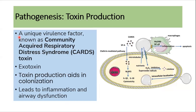The next mechanism in pathogenesis is toxin production. This bacterium produces a toxin known as community-acquired respiratory distress syndrome (CARDS) toxin, which is an exotoxin. This toxin aids in colonization and leads to inflammation and airway destruction via the interleukin pathway and direct cytotoxicity.